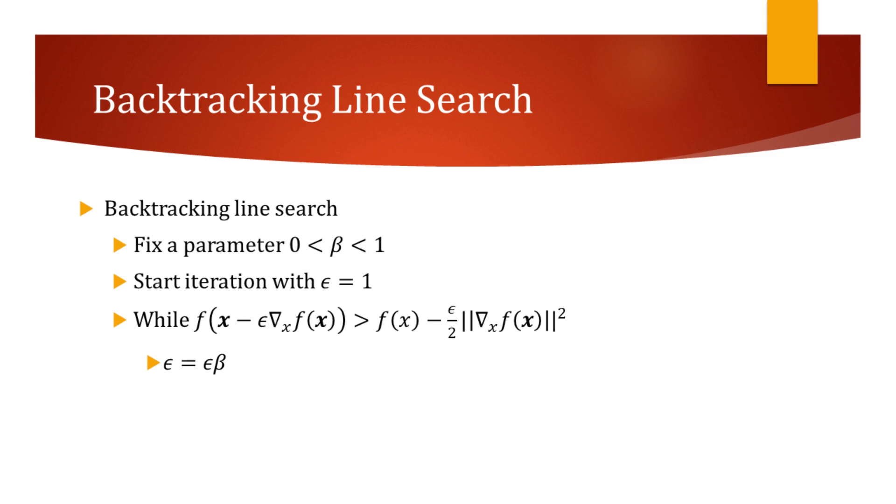Conventionally, learning rate at the start of this method is set to 1. Next, we should evaluate the following inequality. Given that the inequality is true for the current epsilon, we update the learning rate by multiplying it with beta. So after each iteration, epsilon gets smaller.